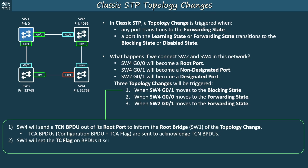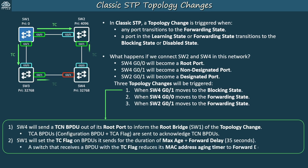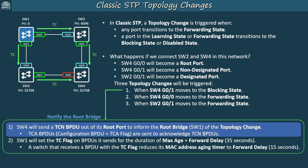In step 2, the root bridge, Switch1, will set the topology change flag on BPDUs it sends for the duration of the max age timer plus the forward delay timer, which is 35 seconds in total. A switch that receives a BPDU with the TC flag reduces its MAC address aging timer to equal the forward delay timer, so 15 seconds. This makes switches clear out old MAC address information and prepare to forward frames according to the new topology. So that's the classic STP topology change process: notify the root bridge, and then the root bridge notifies the rest of the LAN.